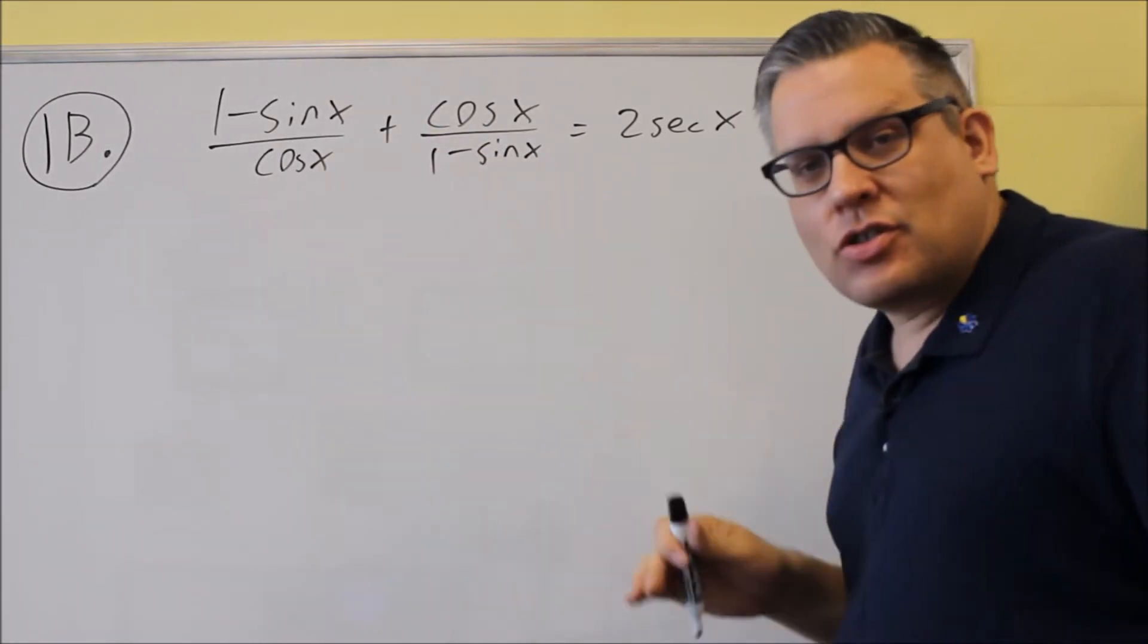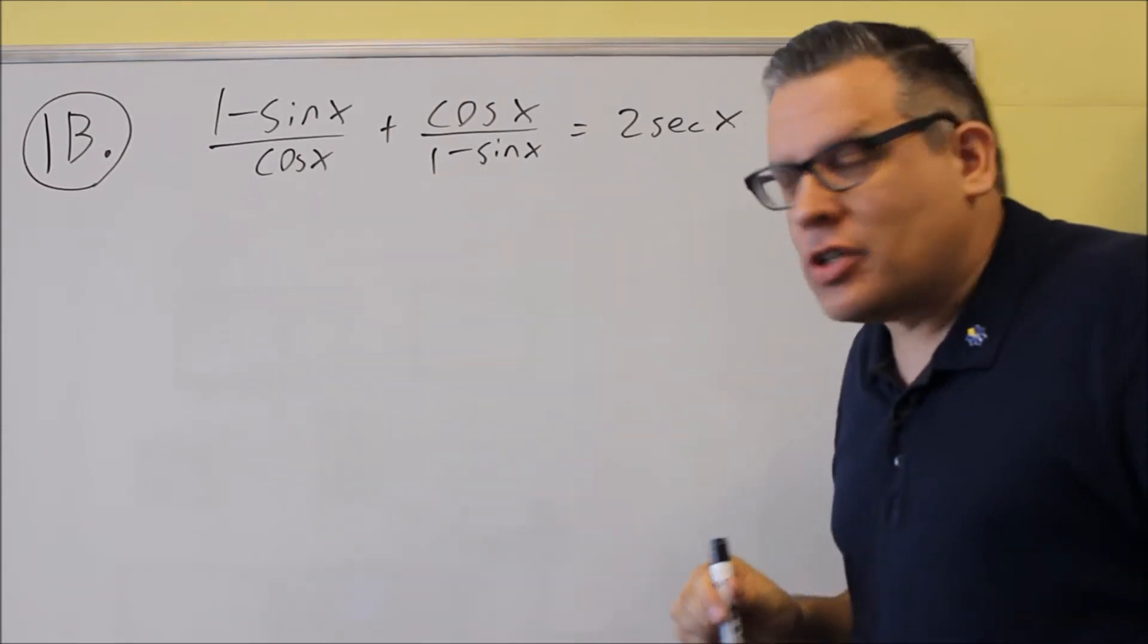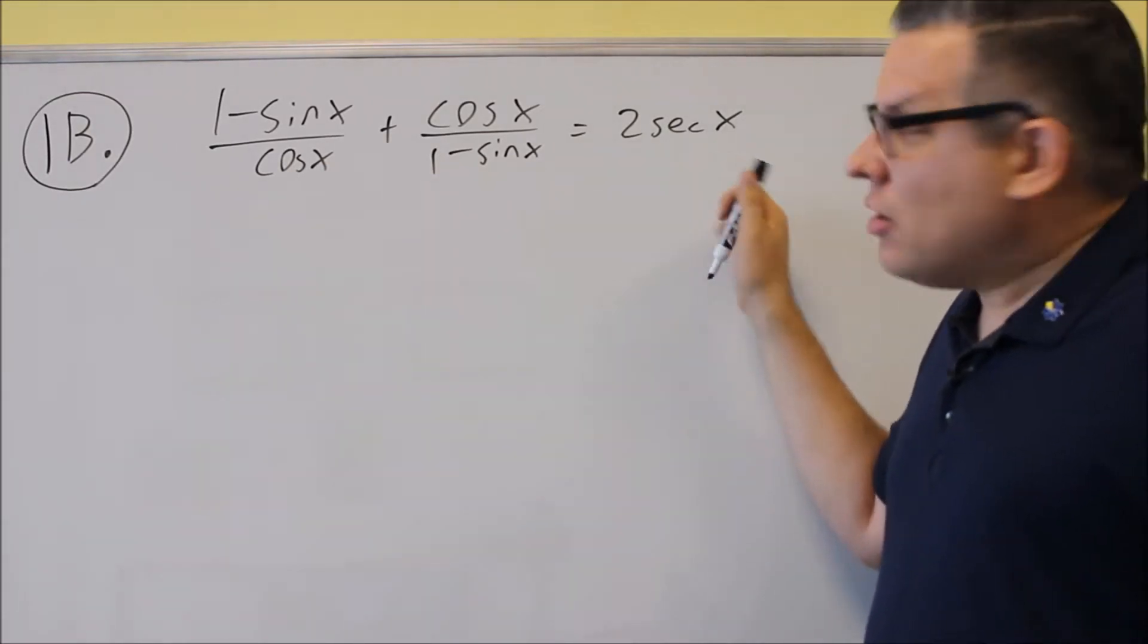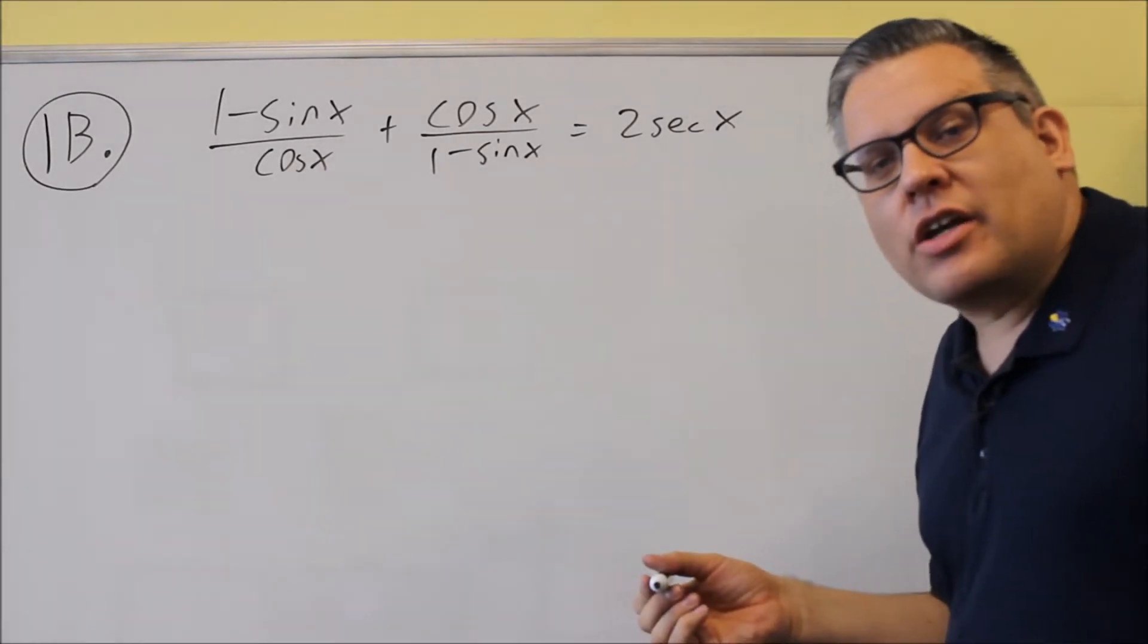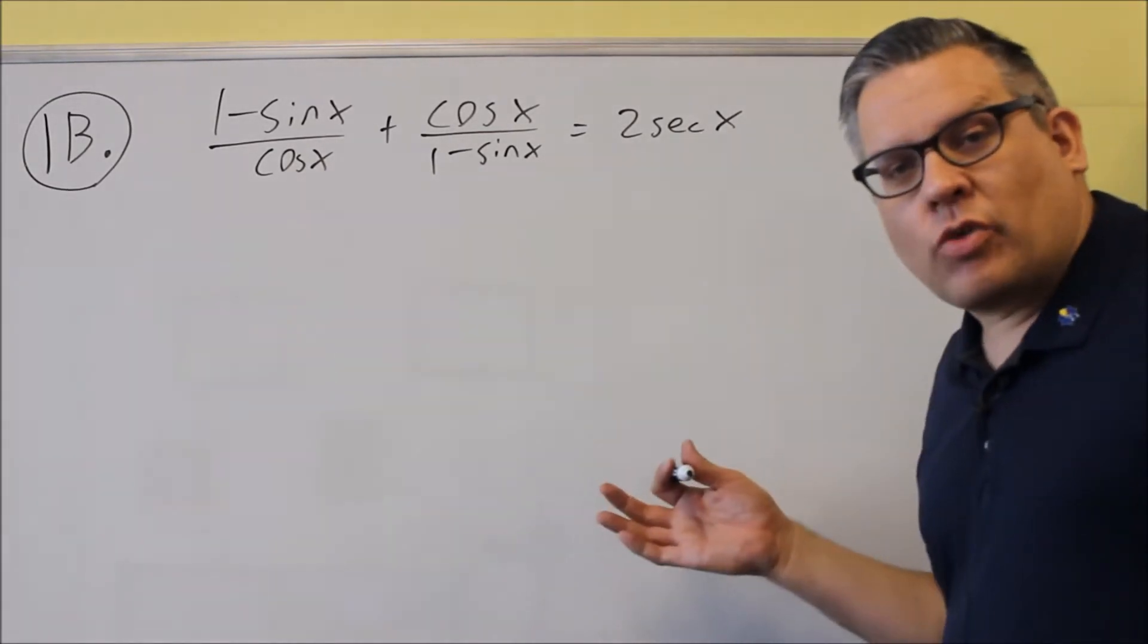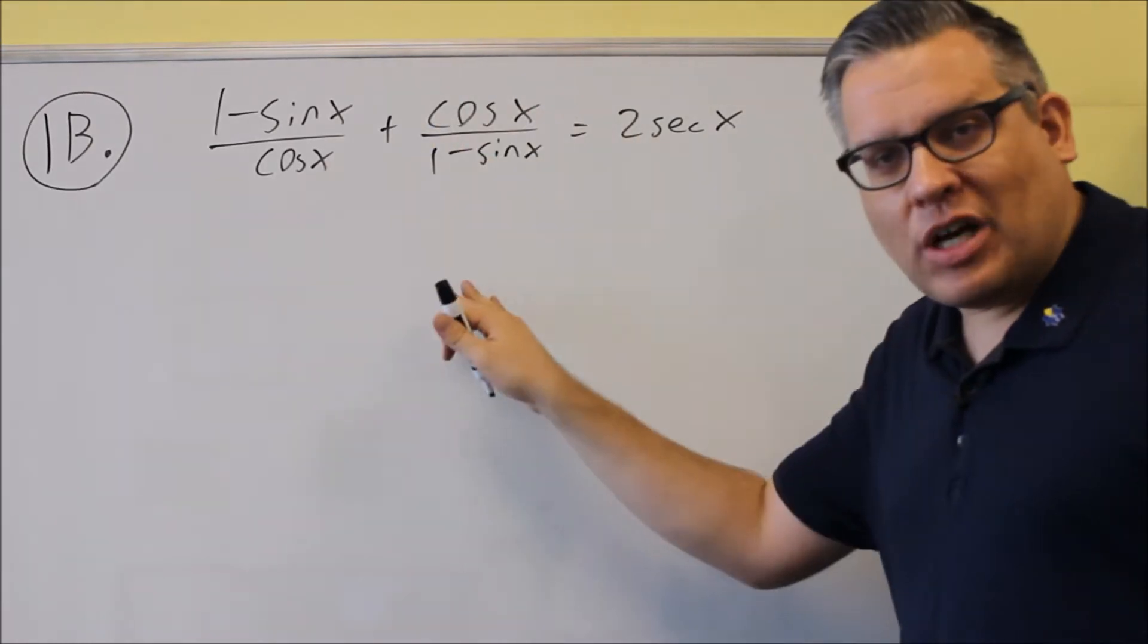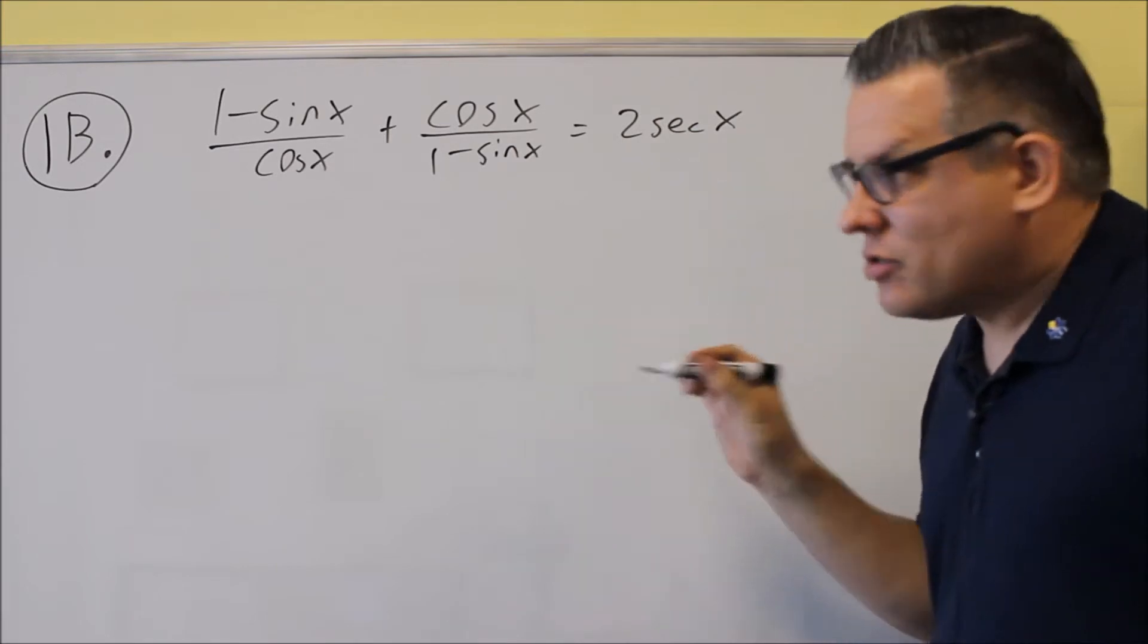Since we have two fractions, once again, whenever you see two fractions, you want to get common denominators with these in order to show that the left-hand side will equal the right-hand side. Also, what I noticed here is the secant, I can change that into a cosine, so I want to do that as well. So I'm going to kind of do two techniques at once. I'm going to get common denominators, and then I'm going to put in a 1 over cosine for the secant x.